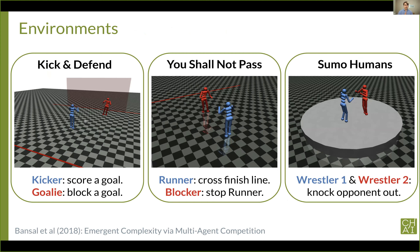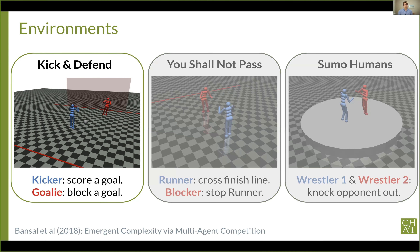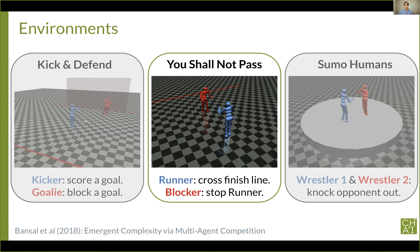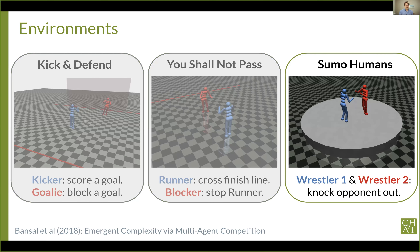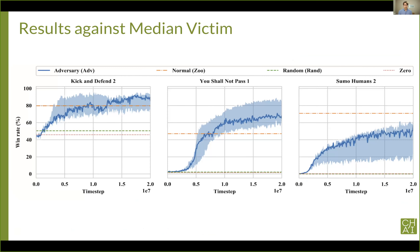We evaluate in three multi-agent environments from Banzel and others. We chose these due to their complexity and competitive nature — all zero-sum games using the MuJoCo robotic simulator. Both agents receive proprioceptive observations of their own joint position, velocity, and contact force, and additionally observe the position of their opponent's joints. In kick and defend, the kicker tries to score a penalty kick defended by the goalie. In You Shall Not Pass, the runner tries to cross the finish line while the blocker tries to stop them. In sumo, two wrestlers seek to knock the other out. We attack state-of-the-art policies from Banzel's Agent Zoo, trained by self-play for over 500 million time steps.